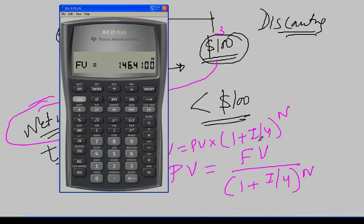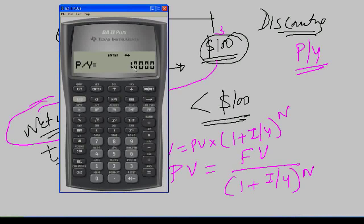There is a question from Ibrahim about his calculator giving a different value. One thing you have to check when you get the calculator from the store is the value of P/Y. You have a button I/Y, and above that you have P/Y. If you press Second and then I/Y, you should get a value of 1. Make sure it comes as 1, because by default some companies set it to 4. Make sure it is 1 for a single sum.